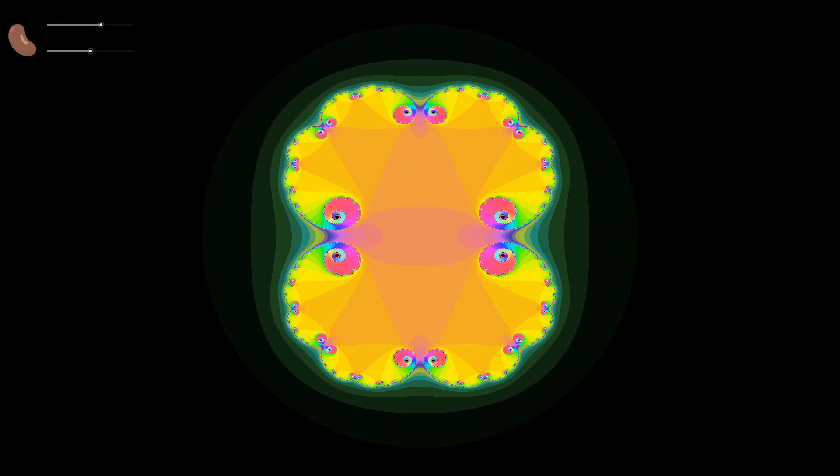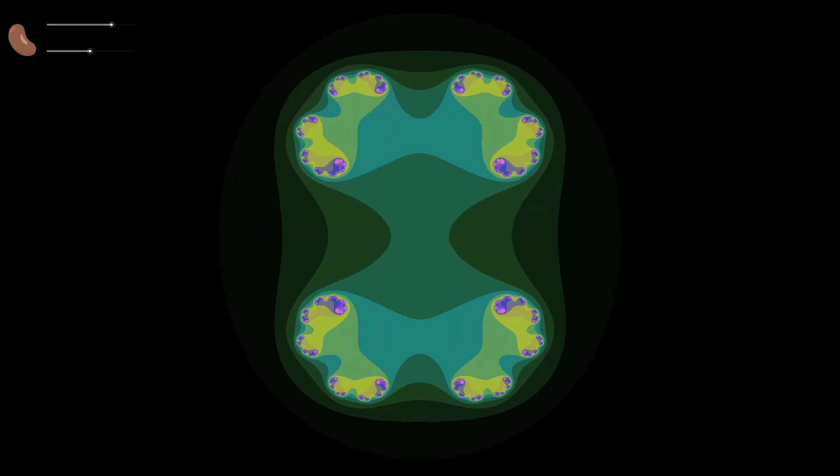Then I wanted to visualize the Julia set — it is almost the same, except it depends on the seed. I set up a crazy gradient like so. And there we have it: if I change the seed, the whole set changes. This is crazily hypnotic.